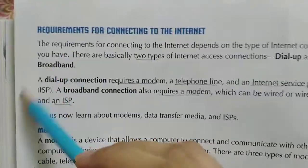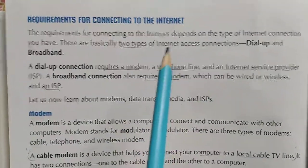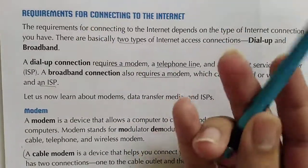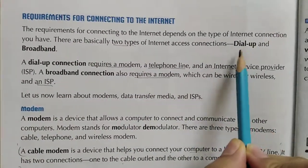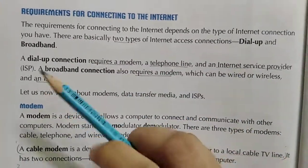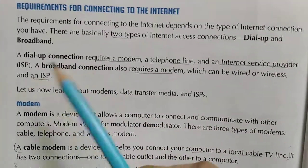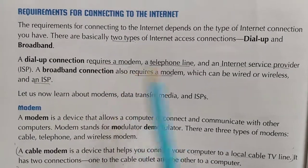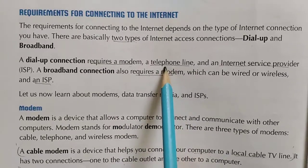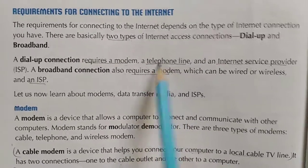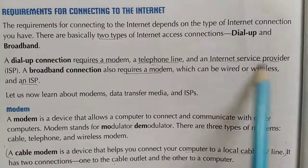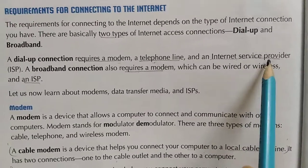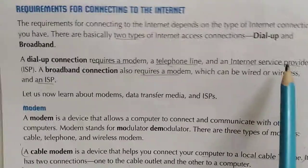There are some requirements for connecting to the internet. There are two types of internet connections: first is dial-up and then broadband. A dial-up connection requires a modem, a telephone wire, and an internet service provider. The internet service provider is the company which provides you the internet.